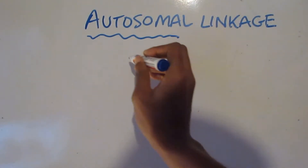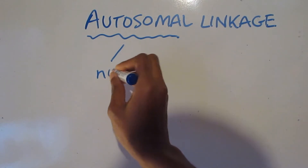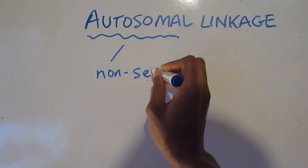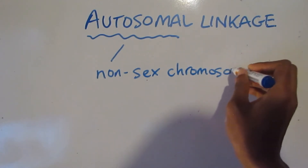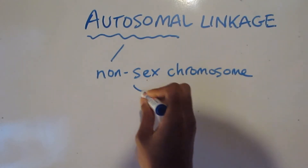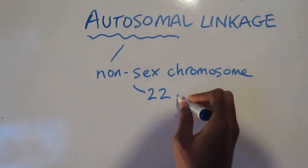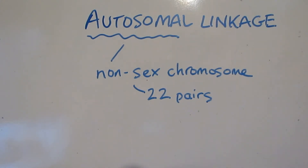So what are autosomes? They are the non-sex chromosomes that occur in our cells. If a body cell has 46 chromosomes and two of those are the sex chromosomes, that means that there are 44 chromosomes that are non-sex chromosomes, and that means 22 pairs.